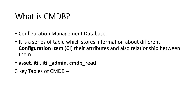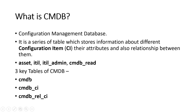There are three key tables in CMDB. First is the cmdb base table — the main top-level table. Second is the cmdb_ci table, which stores configuration items like desktops and laptops, and extends from the cmdb base table. The base table does not extend from any other table. Most tables in ServiceNow extend from the cmdb_ci table — over 100 tables out of the box.